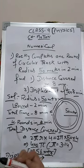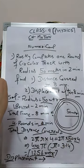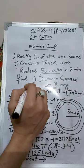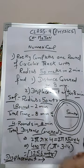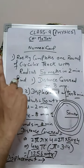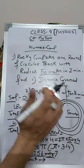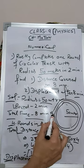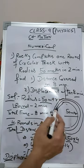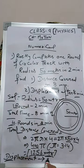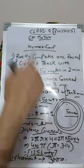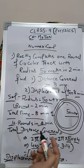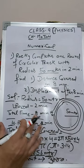Now, what about displacement? Rocky starts from point A and after eight minutes ends back at point A again. Since the initial and final points are the same, the shortest distance between them is zero. So the overall displacement after eight minutes is zero. This example illustrates the difference between distance and displacement in numerical problems.